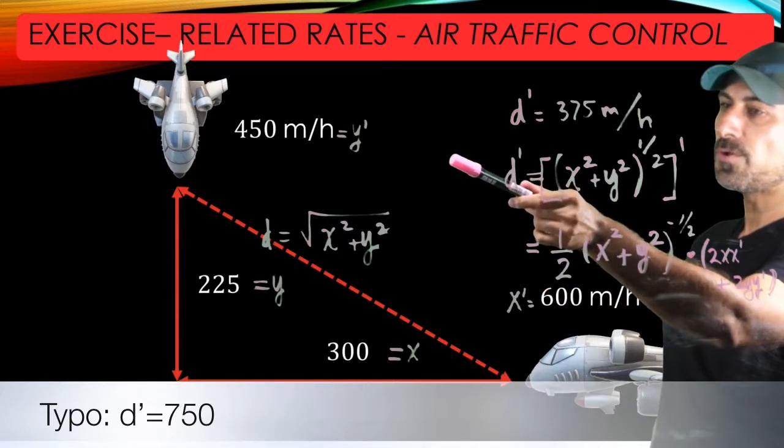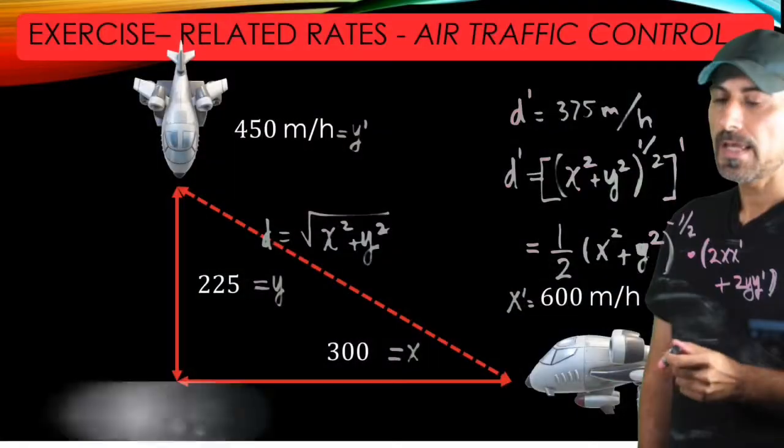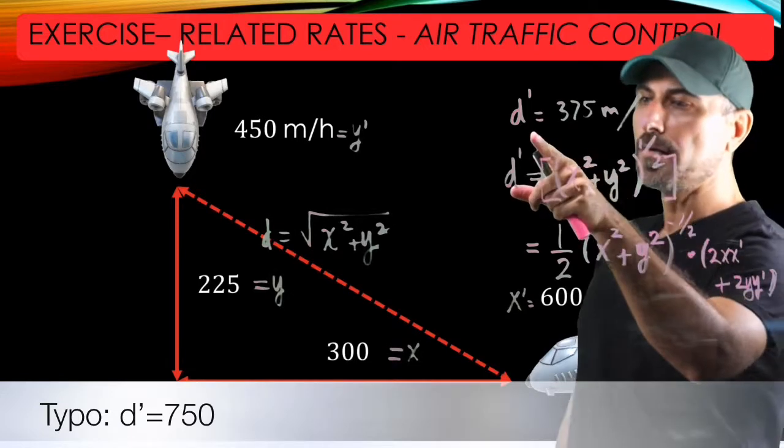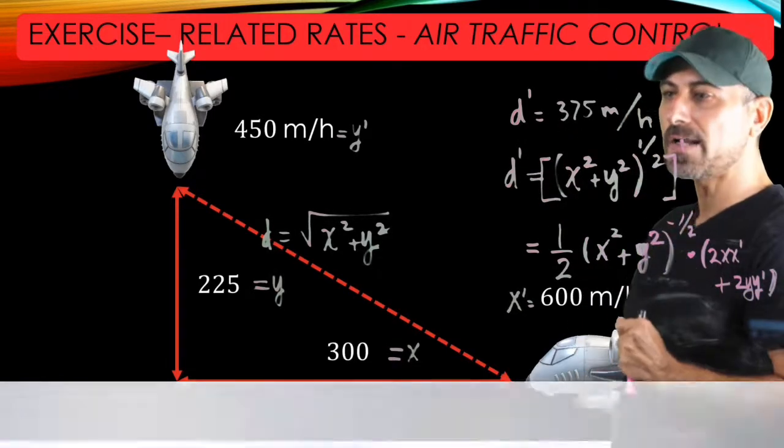and 450 for Y prime, and then 600 for X prime. And once you crunch the numbers, D prime turns out to be 375 miles per hour.